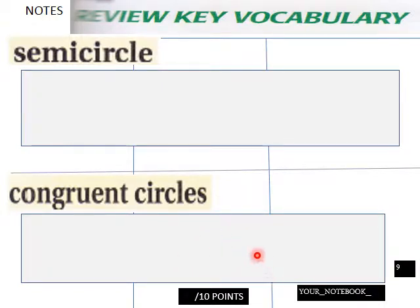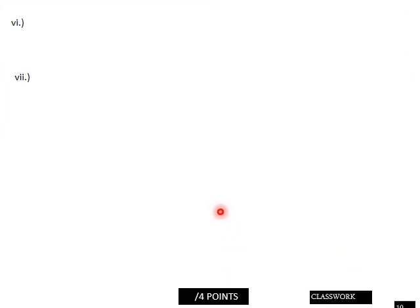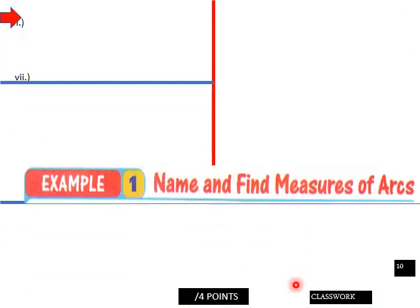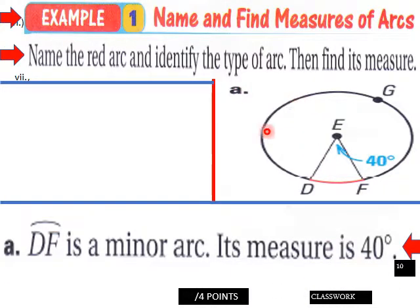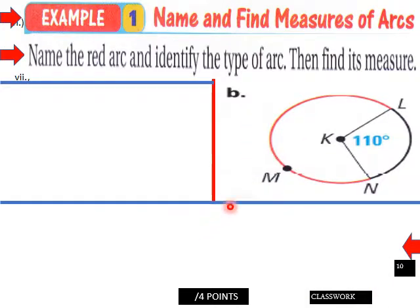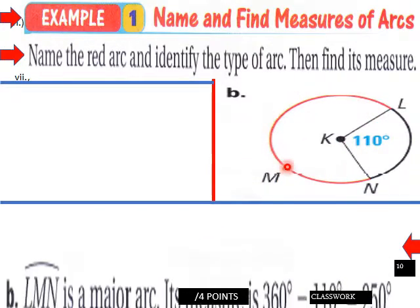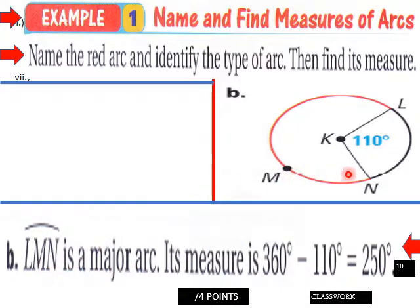I do notebook checks usually on Fridays, so have it ready. Classwork page 10: name and find measures of arcs — name the red arc, identify its type, and find its measure. Arc DF is a minor arc with a measure of 40 degrees. The second red arc is LMN, which is a major arc — its measure is 360 minus 110, which equals 250 degrees.